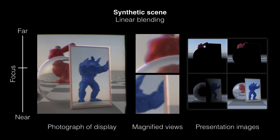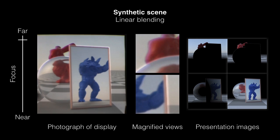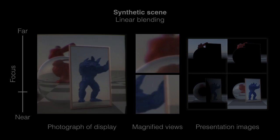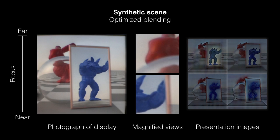Here we show a sequence of photographs taken of the actual display as we change the focus distance of the camera. The camera aperture is chosen to be representative of human pupil size. The appearance of the displayed imagery in the photographs is consistent with the simulated images.